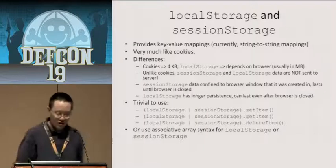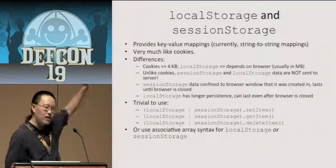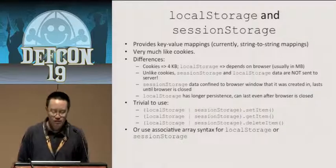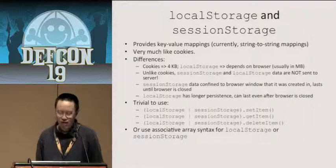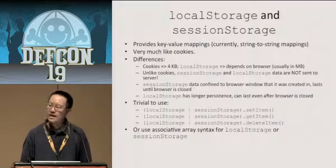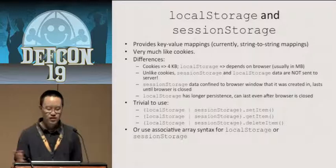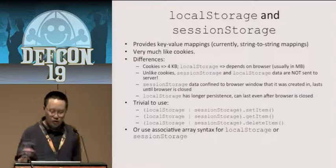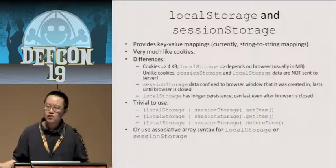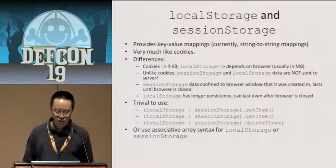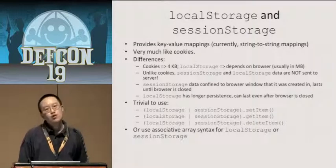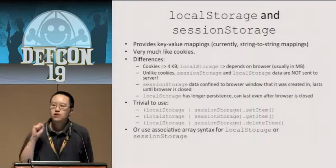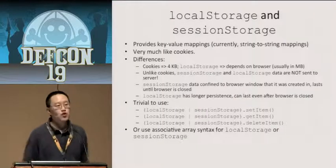The first thing I want to talk about is local storage and session storage. We all know cookies, right? A cookie can only store four kilobytes of information. Local storage — the last time I checked — is around five megabytes of data for a local storage item. If you understand cookies and sessions, local storage and session storage is the same idea: key-value storage, very simple to use. The only difference between local storage and session storage is persistence. Session storage only lasts until the browser is closed. You use it via JavaScript — localStorage.getItem, setItem, deleteItem, or using square brackets syntax.